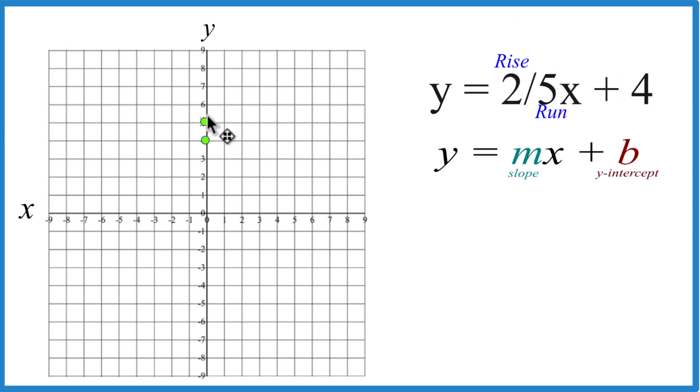Go to the y-intercept, rise two, run five. Then from there, do it again. Rise two, run five, but we're off the graph.